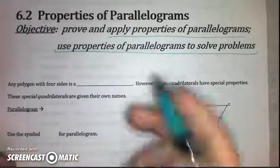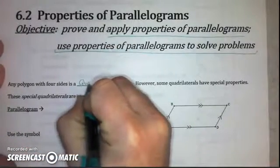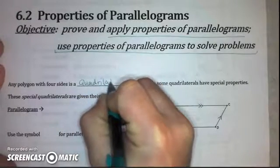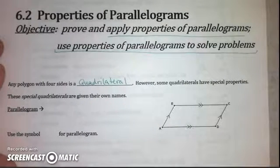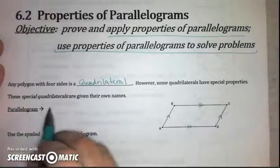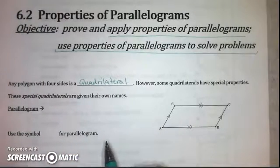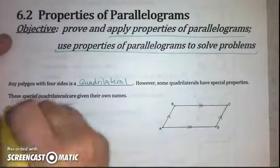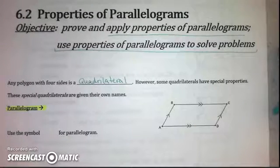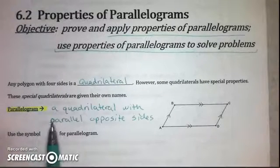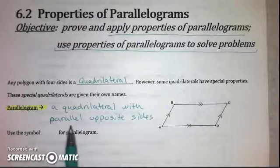Any polygon with four sides is considered a quadrilateral — four sides makes it a quadrilateral. However, some quadrilaterals have special properties, and these special quadrilaterals are given their own names. The first one we're going to look at is called a parallelogram, which is actually your vocab word for this lesson. The definition I want you to have is: a parallelogram is a quadrilateral with parallel opposite sides.